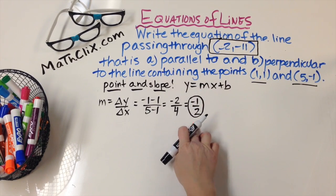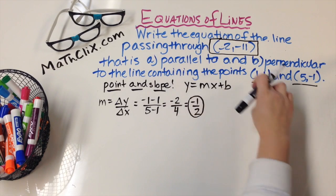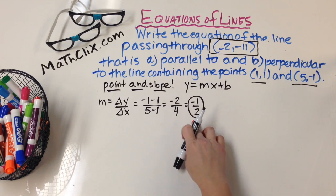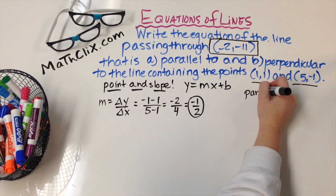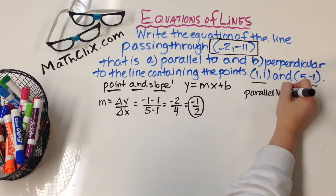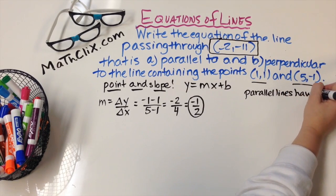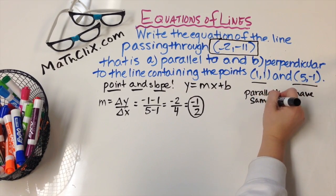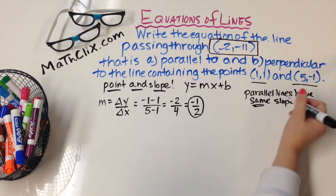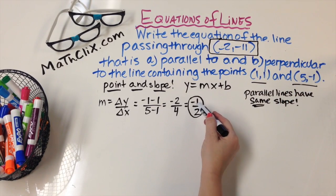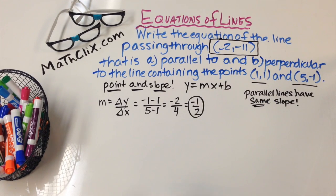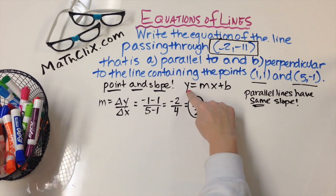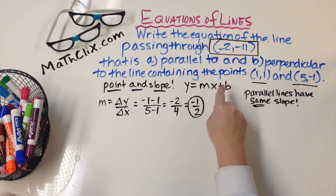Now if we want to find the equation of a line that's parallel to this line, we're going to use this slope, because parallel lines have the same slope. So we're going to use the slope negative one half and our point negative 2, negative 11, and substitute into y equals mx plus b and solve for b.